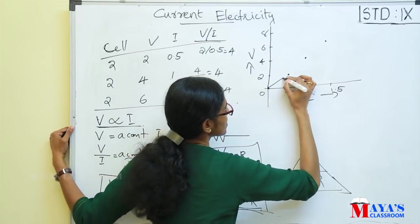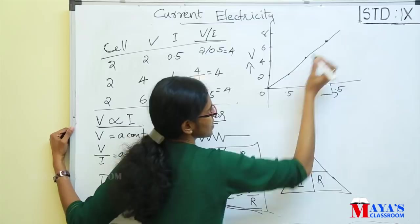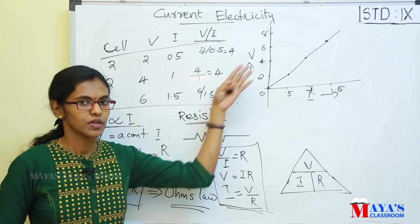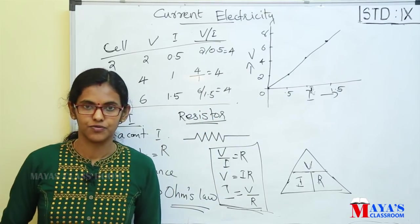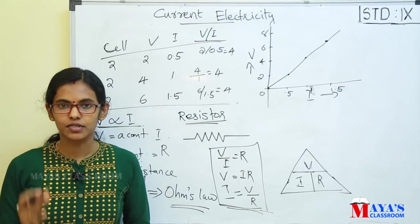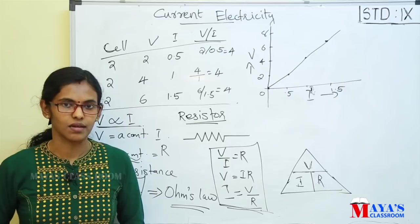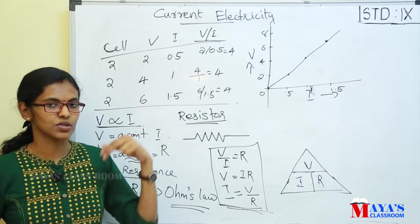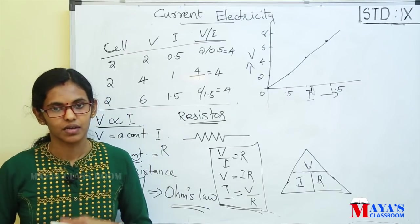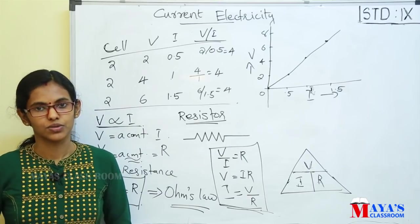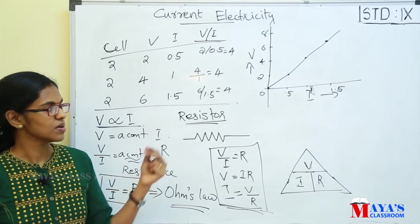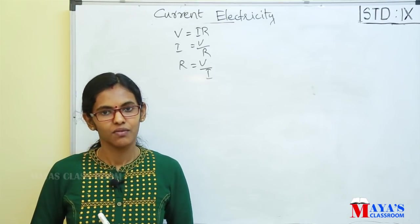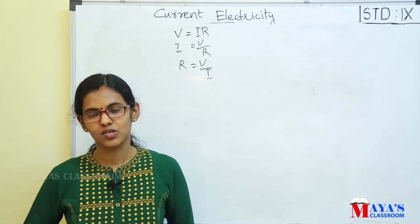Connecting these points gives a straight line graph. This straight line graph shows that voltage is directly proportional to current — V proportional to I, and I proportional to V. This is the graphical representation of Ohm's law. Ohm's law: current increases with voltage, and that gives a straight line graph.